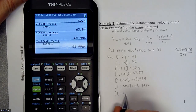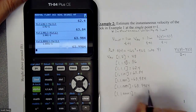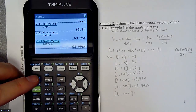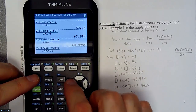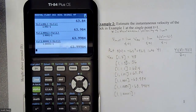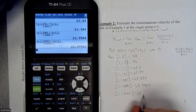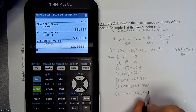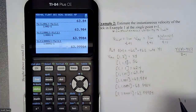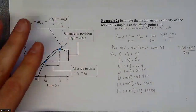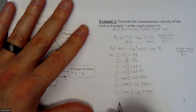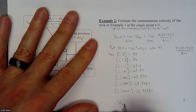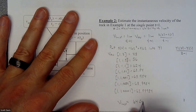I bet if we try 1.00001 it's just going to add another 9. Let's verify — inserting another zero, yep, 63.99984. So basically we are getting infinitely close to 64. Our instantaneous velocity is approaching 64 feet per second.